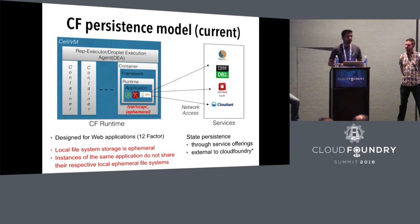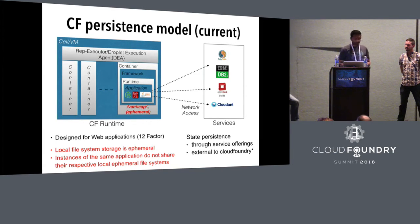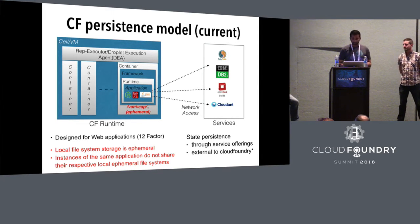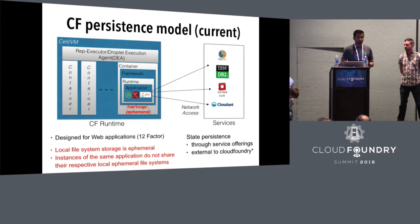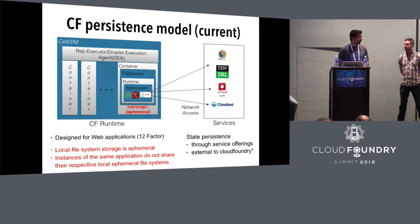If you have multiple instances of your application, chances are they are deployed in different cells and this local ephemeral storage is not shareable across instances, so there is no common namespace. The only way to do state persistence in Cloud Foundry today is via the services route. You have different types of services available: relational services like DB2 and Oracle, NoSQL engines like Cloudant, and object storage services like Swift, which you can use for persistence.